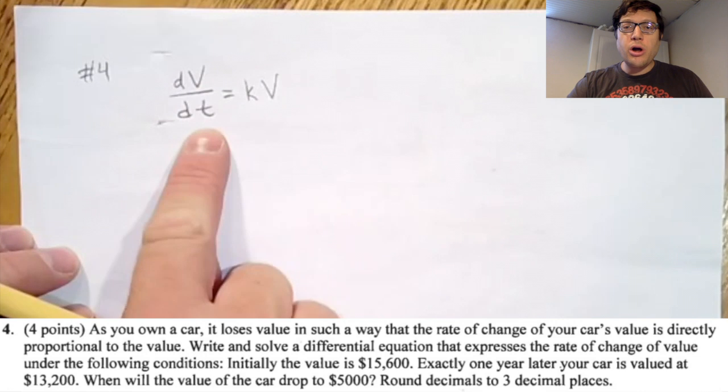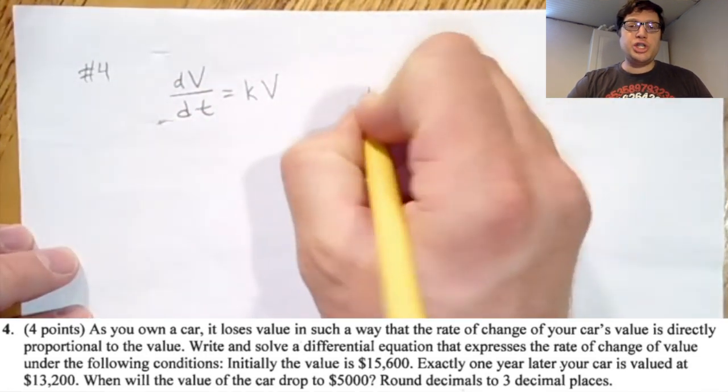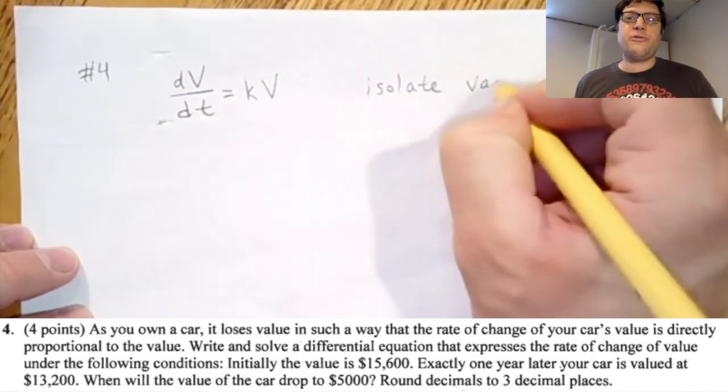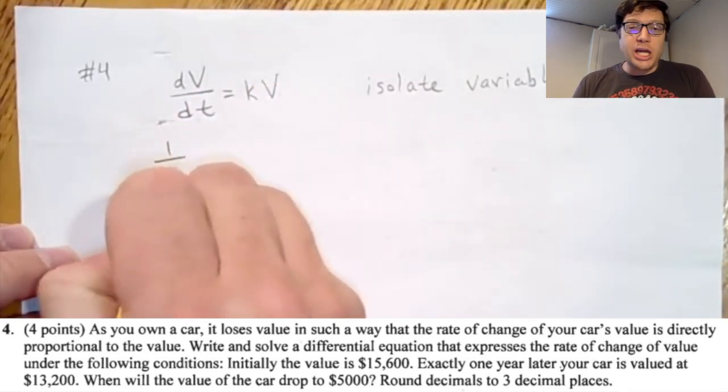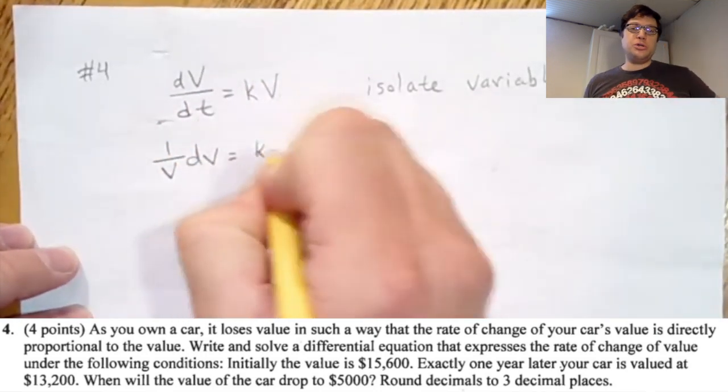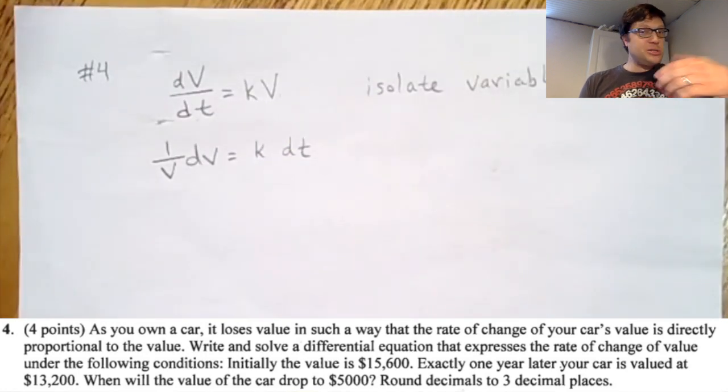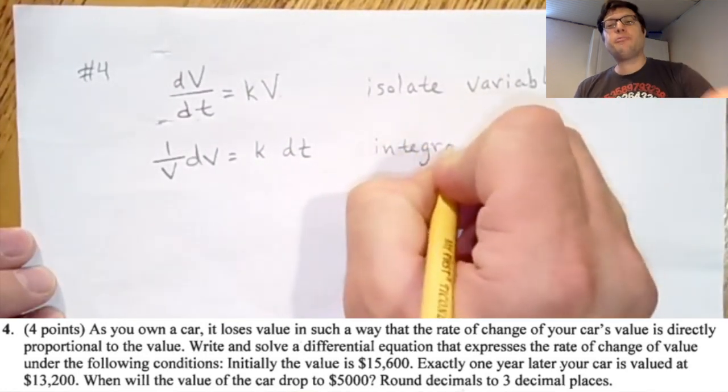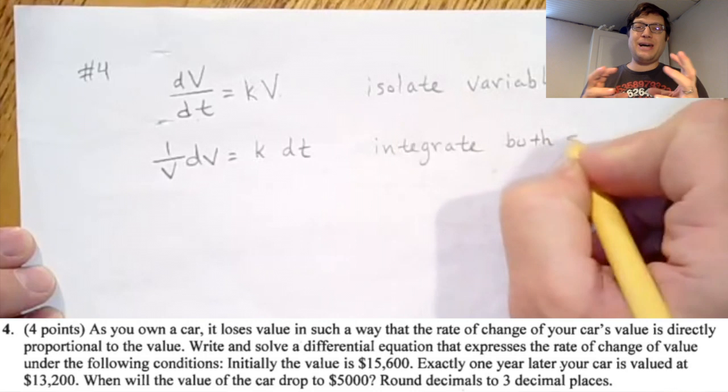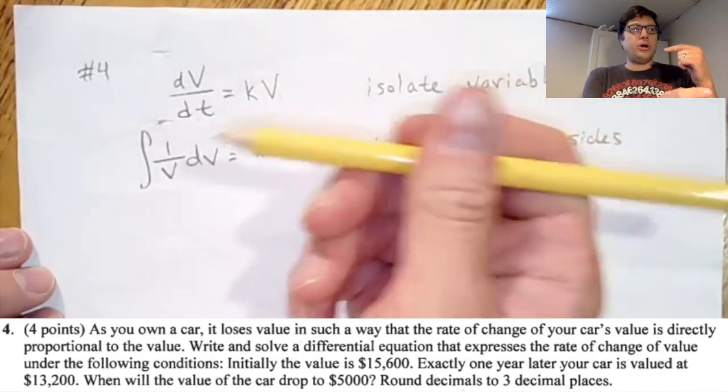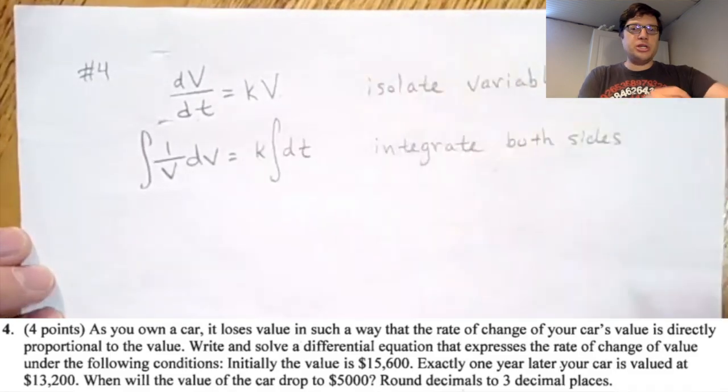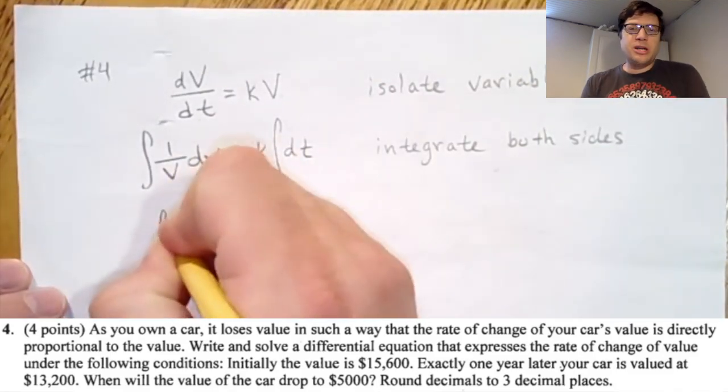Here we're given the equation as you own a car, its value is changing. It loses its value in some sort of differential equation manner that says the rate of change is directly proportional to the value. So directly proportional means that there's some k constant of proportionality that is impacting the value, and then as the value changes, you either speed up your depreciation or you slow down your depreciation, but there's going to be some change.